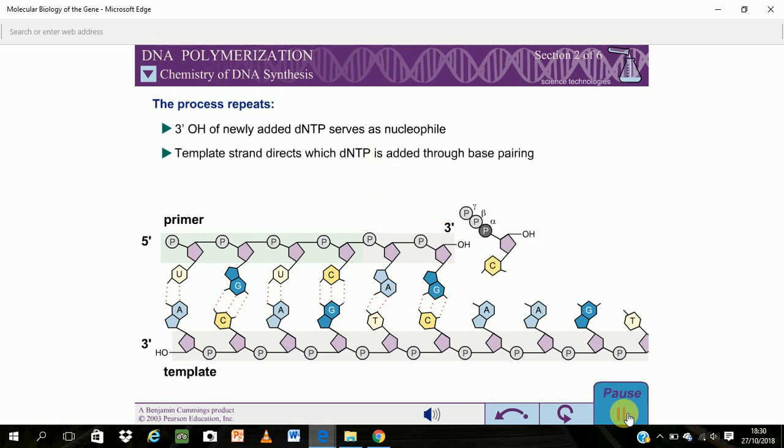The template strand directs which of the four possible DNTPs is added. During replication, the DNTP that base pairs with the template strand is highly favored for addition to the primer strand.